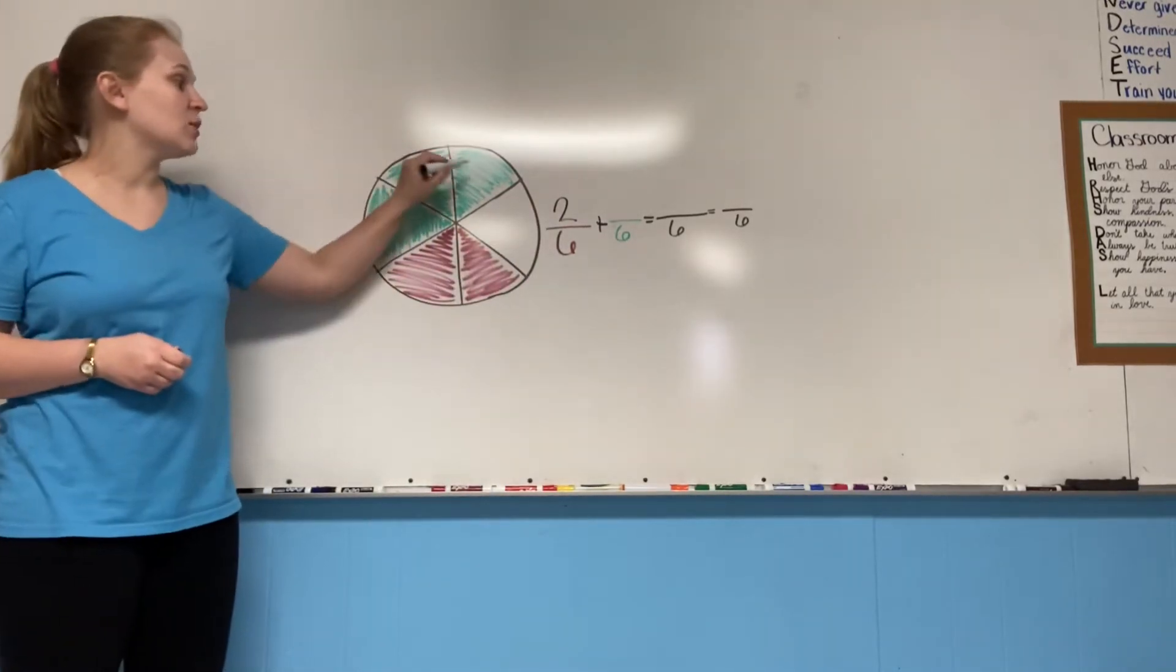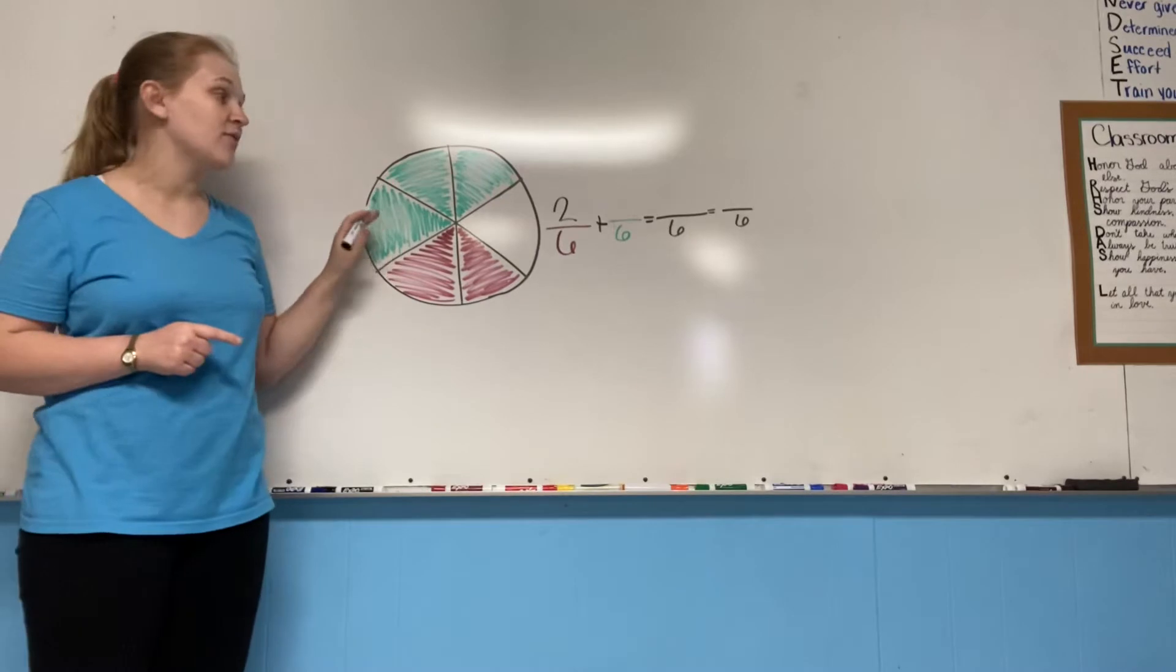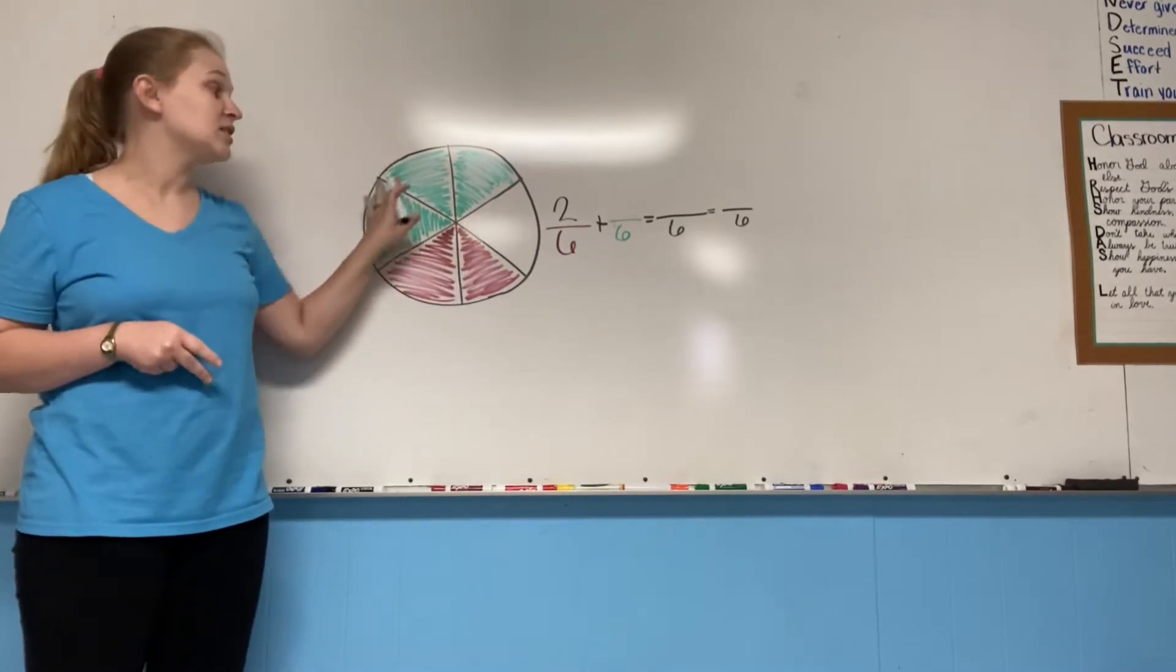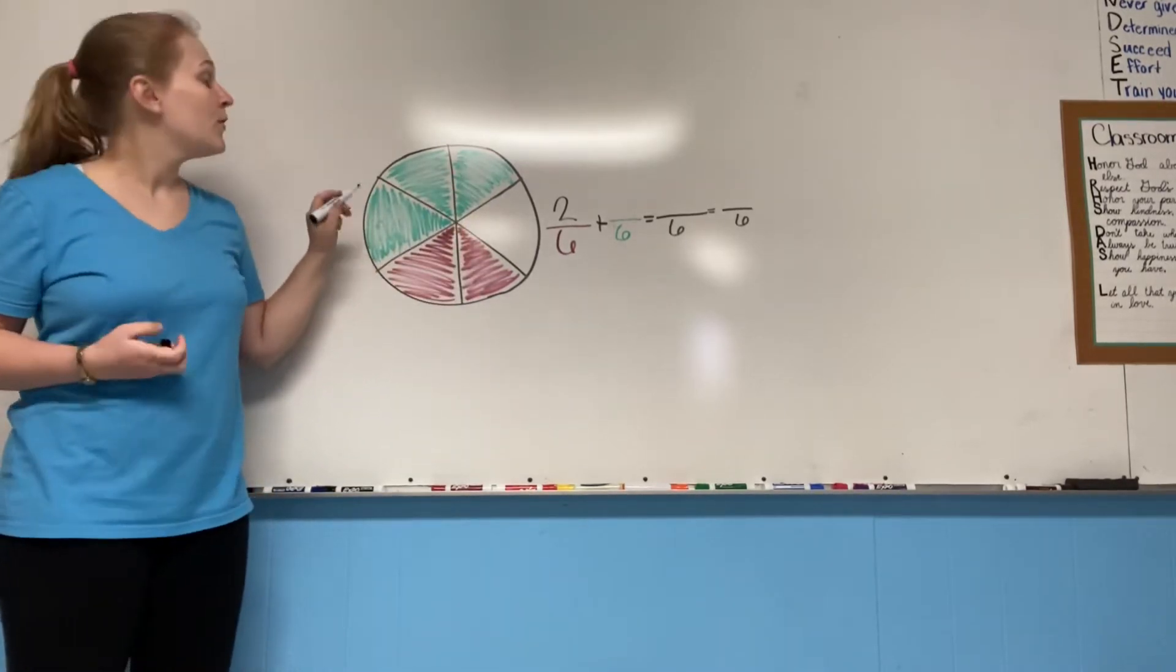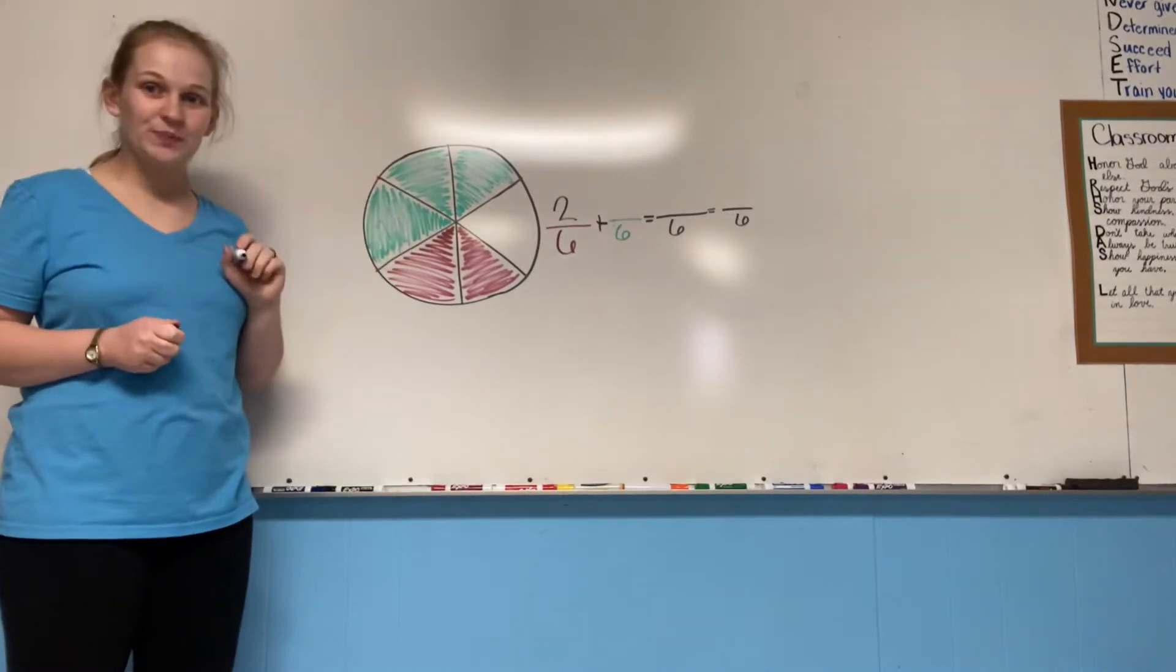Now the next fraction is going to be this green part. We already know it's going to have the same denominator because it's the same number of possible parts, six. So what would the numerator be? Three.